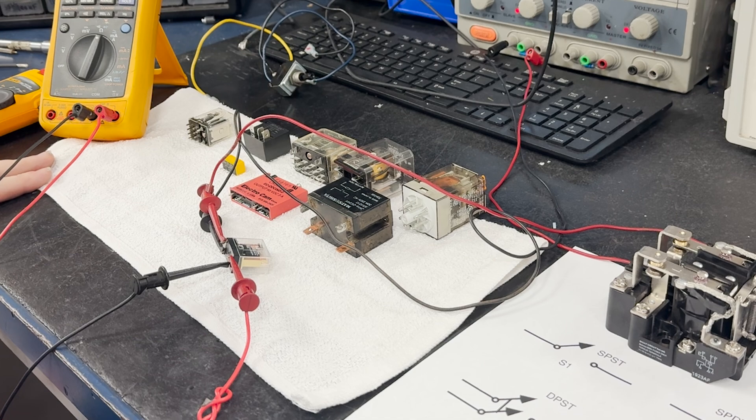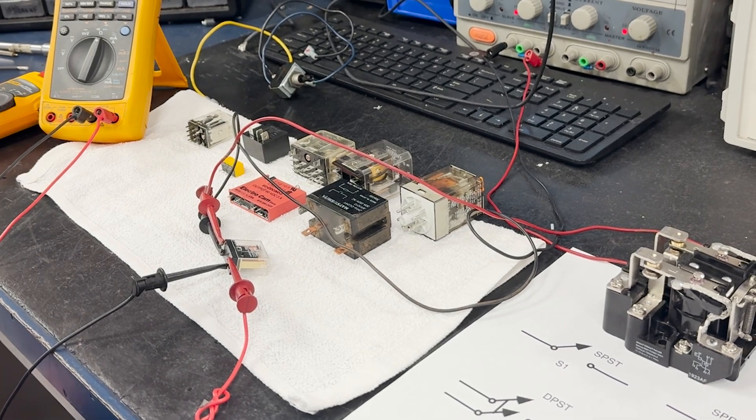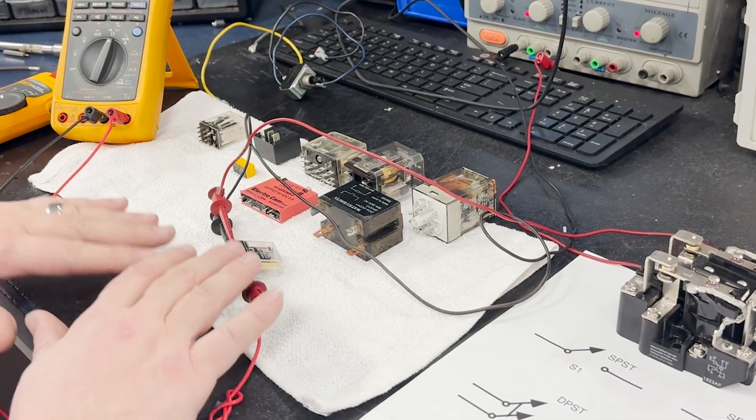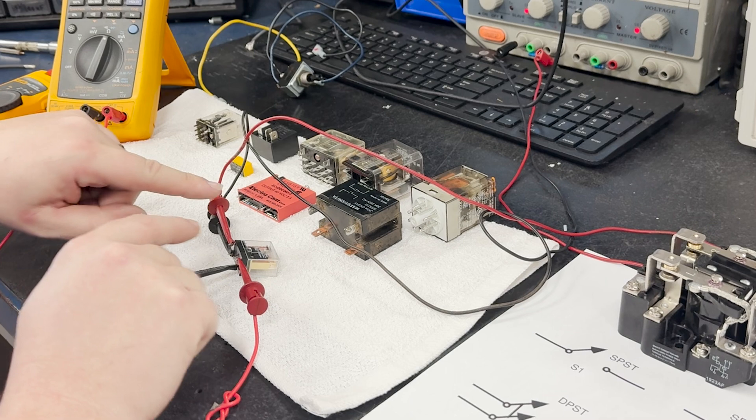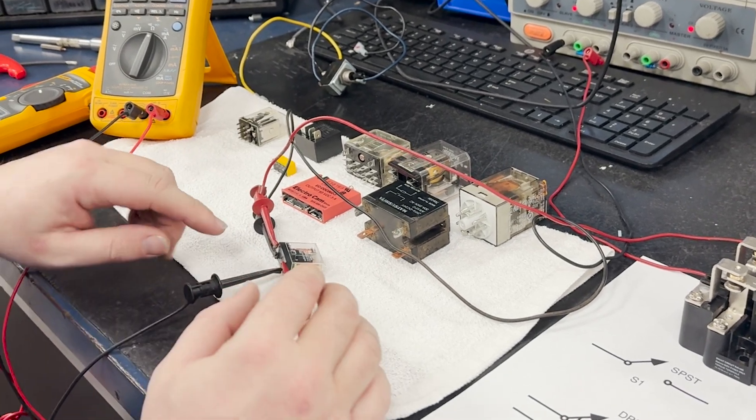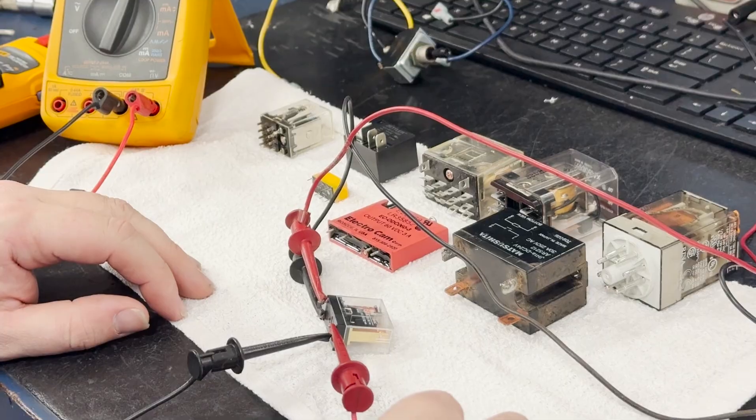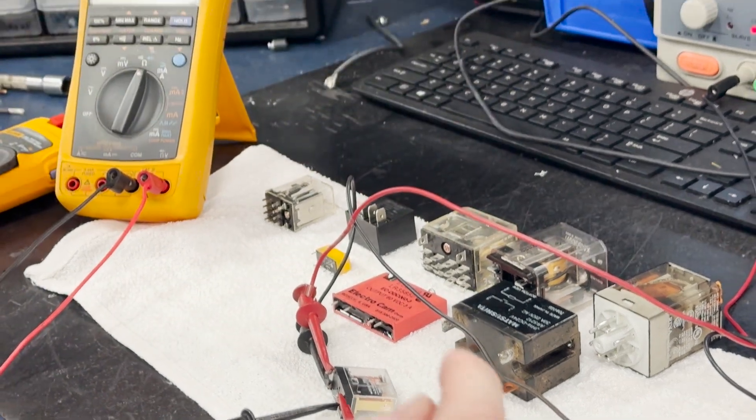Today we're going to explore relays, an essential electrical component. A relay is essentially an electrically controlled switch. It allows us to use a small electrical signal to control a larger electrical circuit. This works similarly to a manual switch.